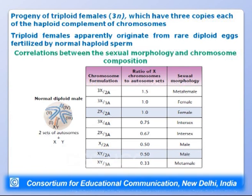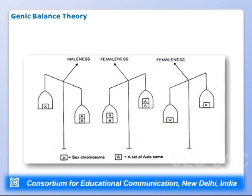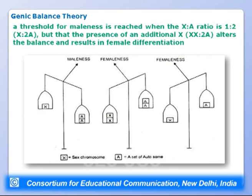Based on these observations, Bridges proposed the genic balance theory: a threshold for maleness is reached when the X:A ratio is 1:2 — one X chromosome and two sets of autosomes. If an additional X chromosome is present, the balance is altered and female differentiation results. A single X with two autosome sets produces maleness; adding another X disturbs the balance and produces femaleness.